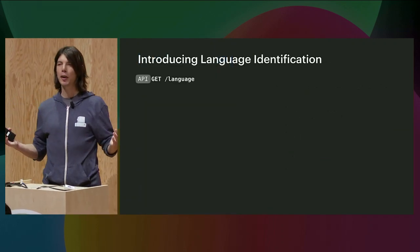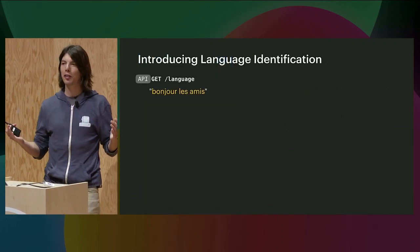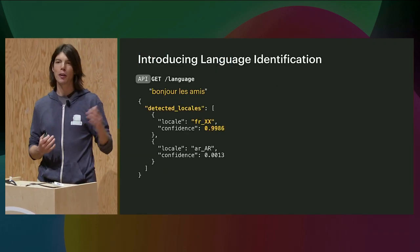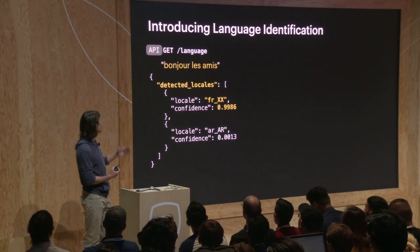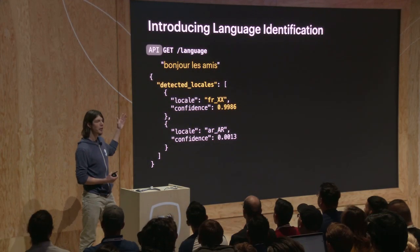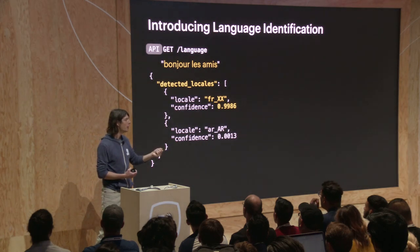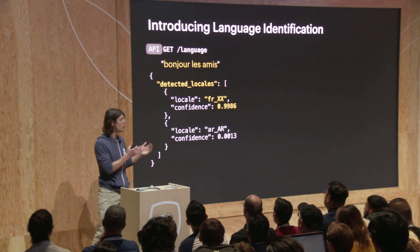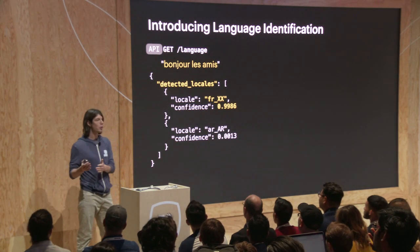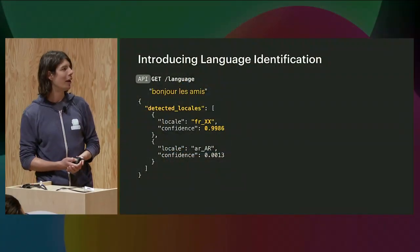This is why I'm super excited to announce that starting today, we're launching a language identification API. Using the Get Language API, you can send a message and figure out what the correct language is, reroute to the correct WIT app, and get the correct entities back in the response to gracefully and fully handle the user request.